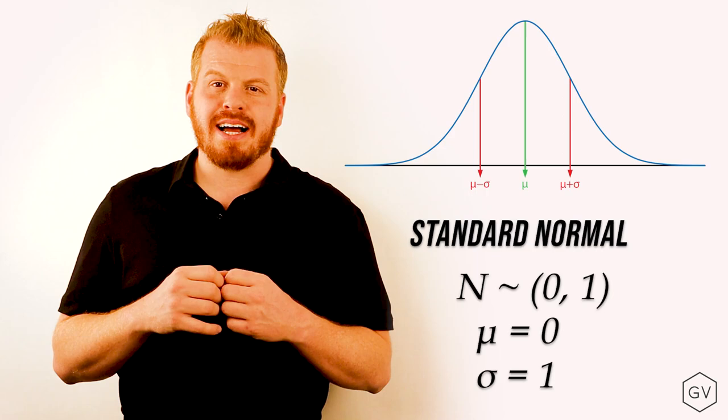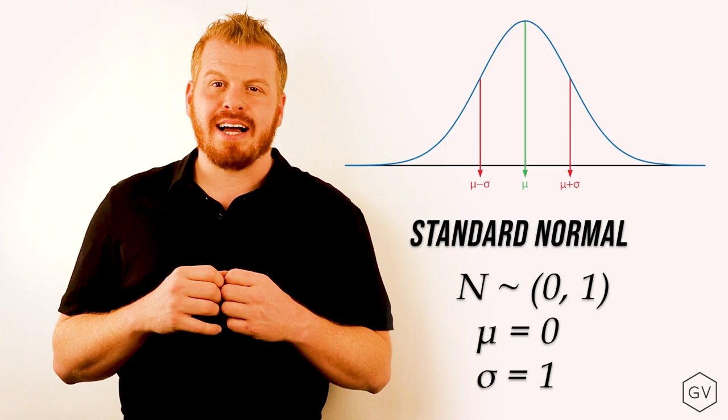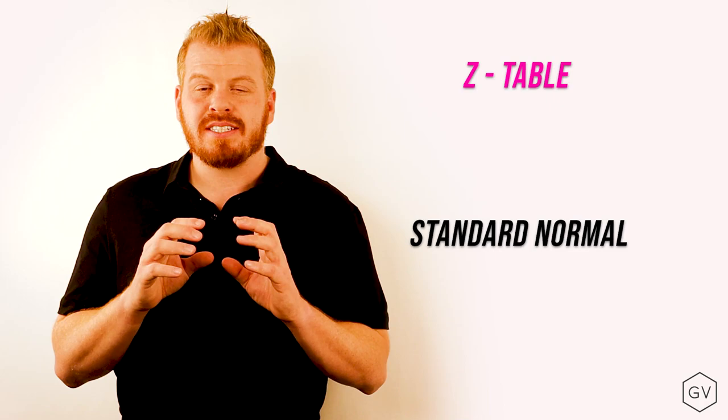Some of you who have taken statistics classes before might remember something called the Z-table. The Z-table is in relation to the standard normal distribution. It allows you to look up the probability of a given amount of standard deviations occurring.